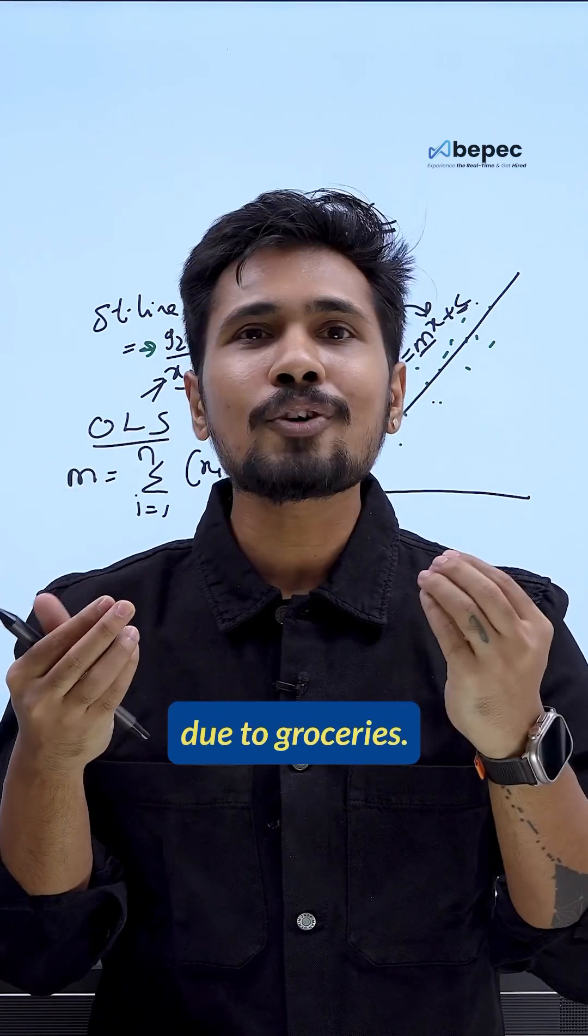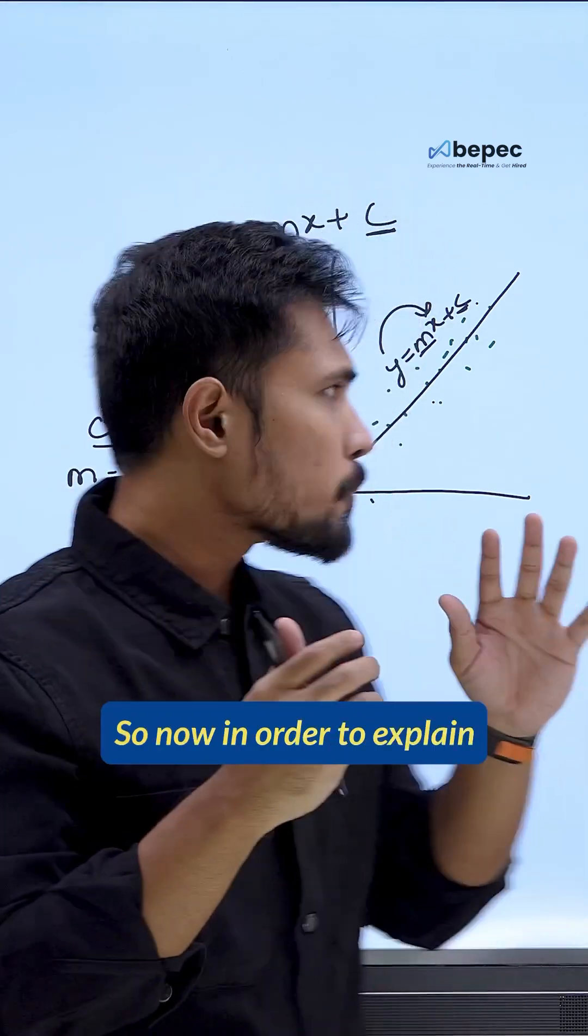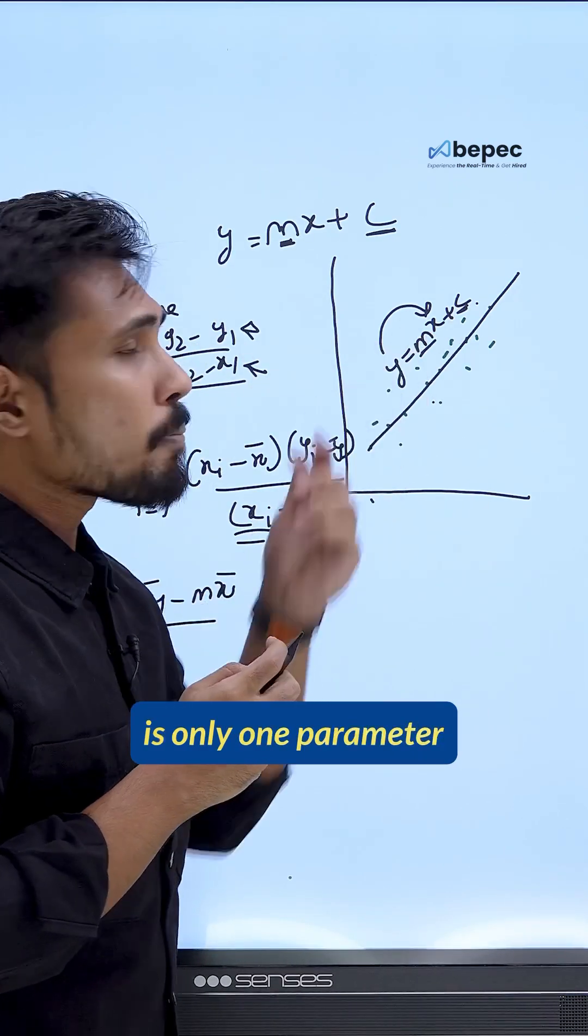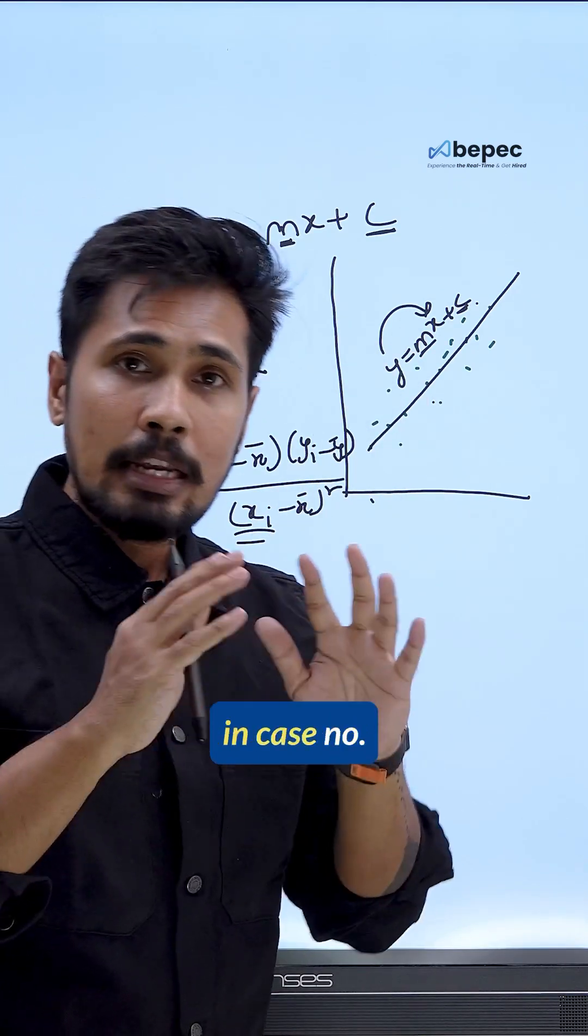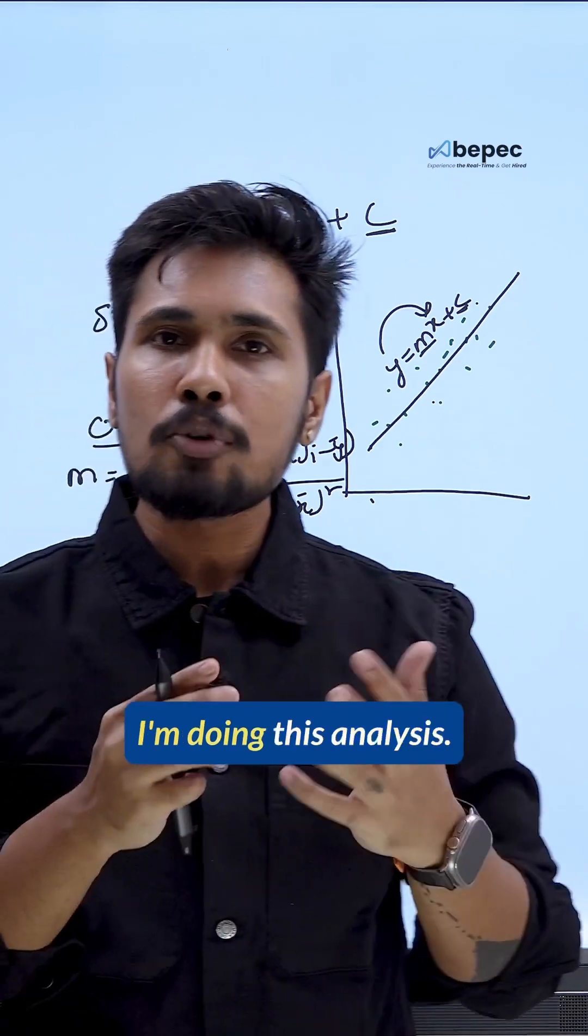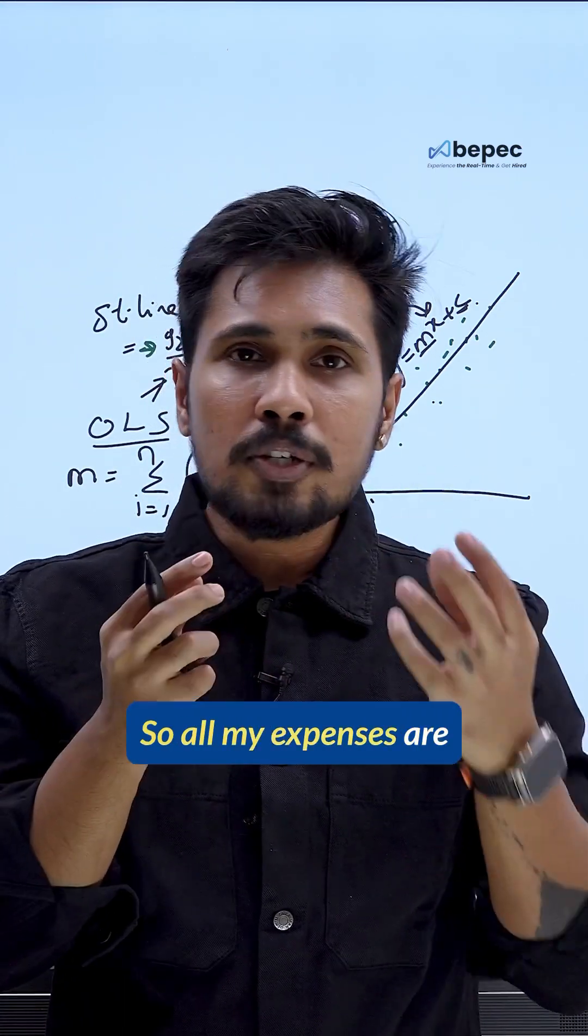So now in order to explain, why is there only one parameter which is groceries? In case, no. For example, whenever I'm doing this analysis, all my expenses are not due to groceries.